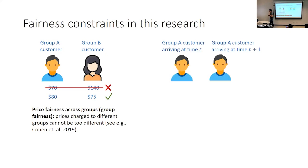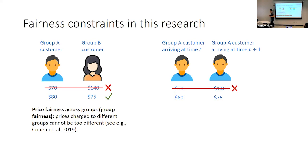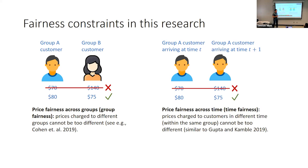Another example: you and your friend are exactly the same type of customer. You arrive at time T and your friend arrives at time T+1, yet you are charged $70 and your friend is charged $140. If we control the price so the difference is small, that is better. This is price fairness across time, or time fairness — prices charged to customers arriving at different times within the same group can differ, but not by very much.